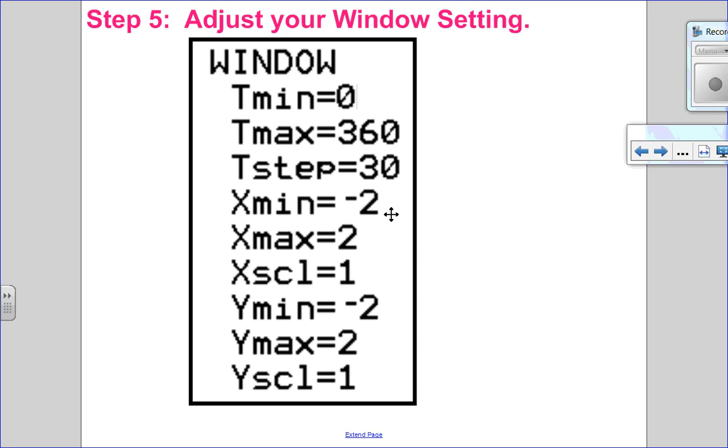And then step number 5, I want to adjust my window setting. So my parametric variable t has to do with my angle. So I'm going around the unit circle 0 to 360 and I'm going up by 30 degrees. So you can see why I remembered the 45 degrees because I'm not going to be seeing those on the unit circle. I'm going to go 0, 30, 60, 90, etc. Now because it is a unit circle, which has a radius of 1, I just condense my x and y values because I know it's going to be between negative 1 and positive 1. So I just go negative 2 to 2 and up by 1.